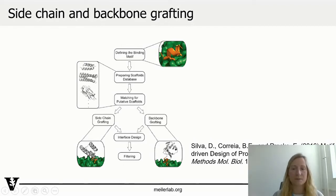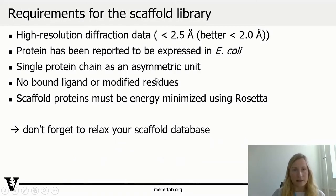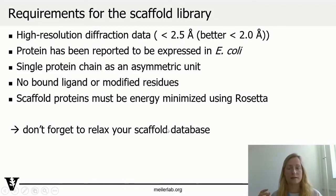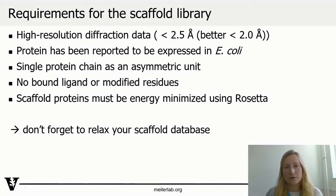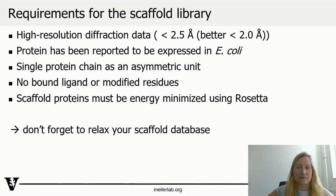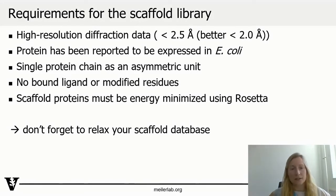One important word about the scaffold library: you really want to use high-resolution diffraction data — at least 2.5 angstroms, better 2.0 angstroms — because you need the backbone to actually be where you say it is. Most of the time you're downloading these from the protein database, and you have options to modify your search. For example, you might select proteins expressed from E. coli if that's your expression system. Importantly for these protocols, it must be a single-chain protein with no bound ligands and no modified residues. Also, before you use it, relax your scaffold database so Rosetta can use it appropriately during the protocol.